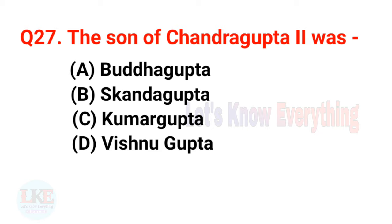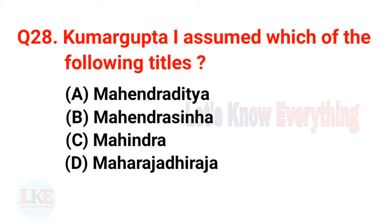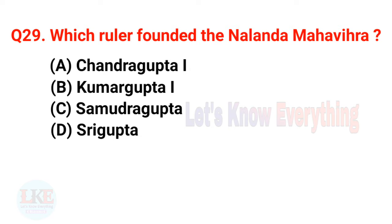Question 27: The son of Chandragupta II was Kumar Gupta. Question 28: Kumar Gupta I assumed which title? Options: A — Mahendraditya, B — Mahendra Sinha, C — Mahendra, D — Maharaja Dhiraja. Right answer: option A — Mahendraditya. Question 29: Which ruler founded the Nalanda Mahavihara? Right answer: option B — Kumar Gupta I.